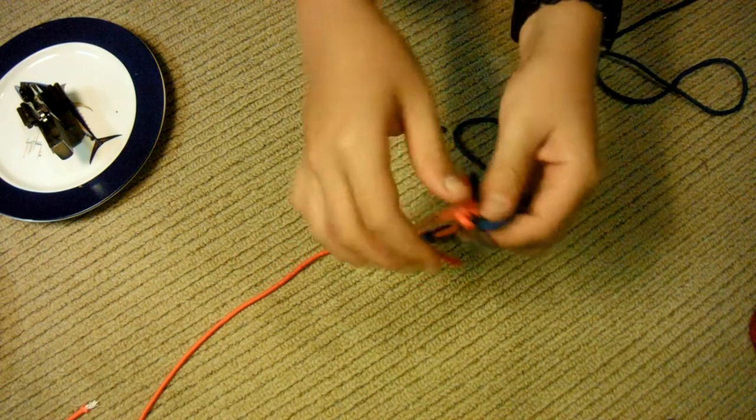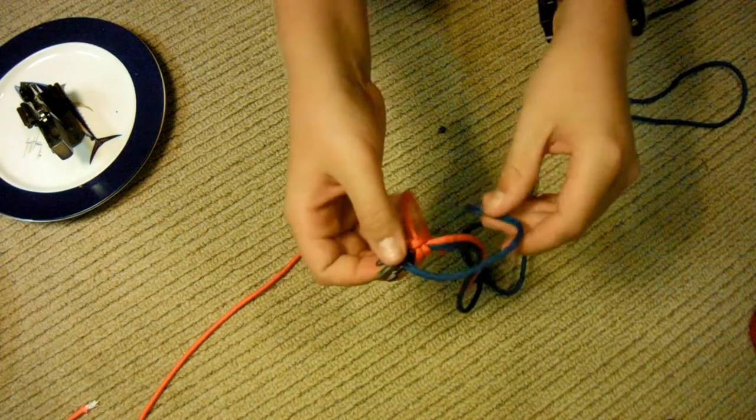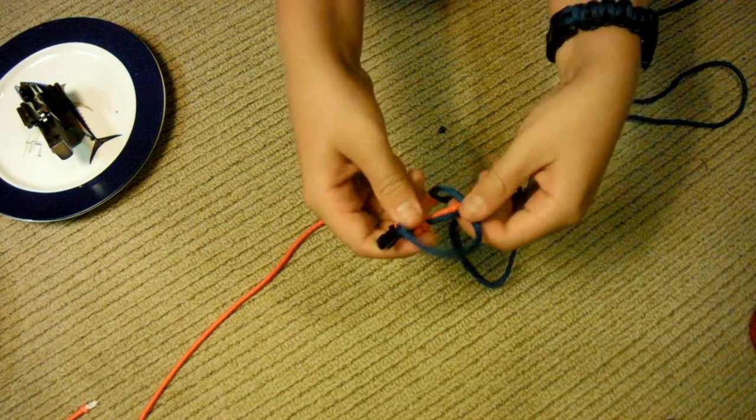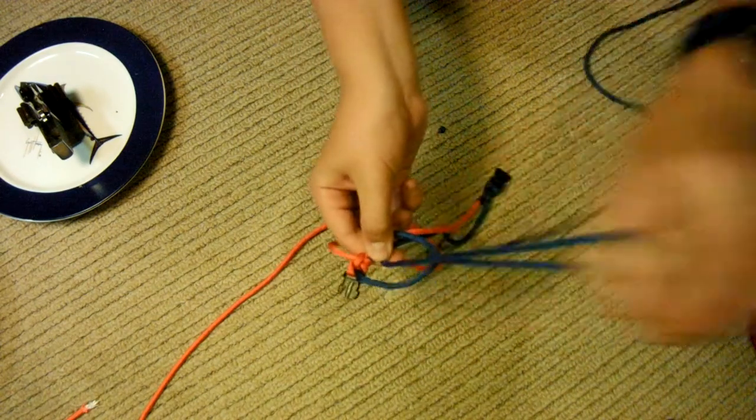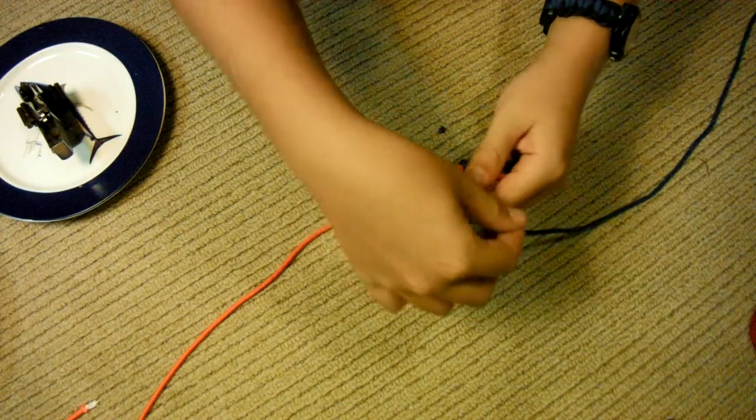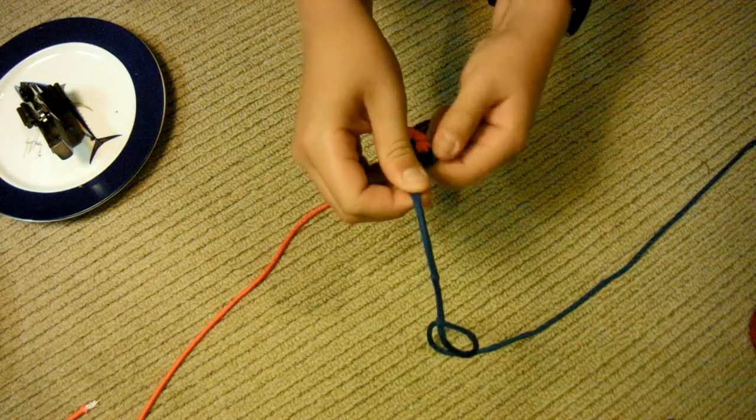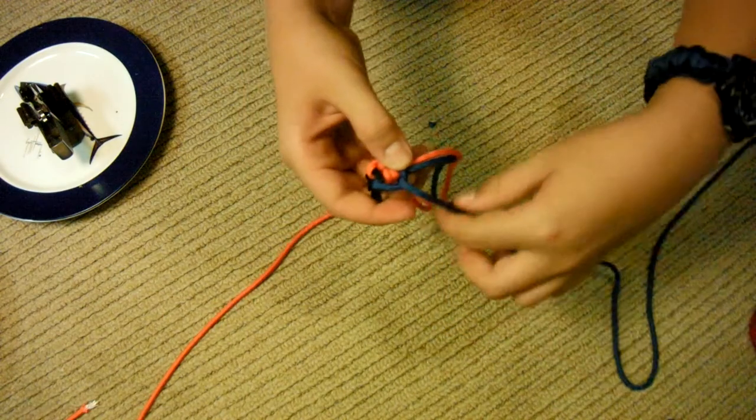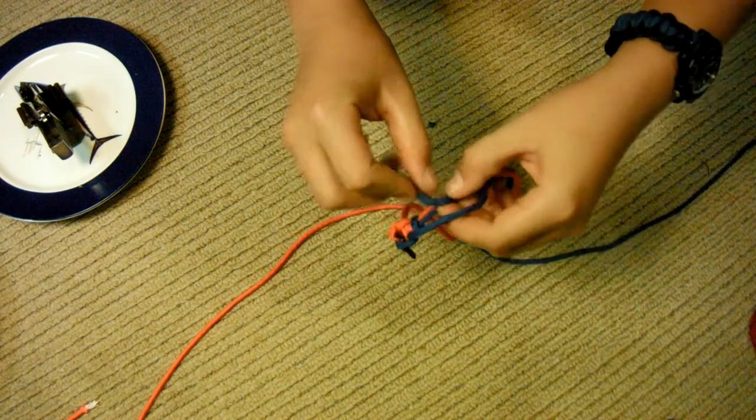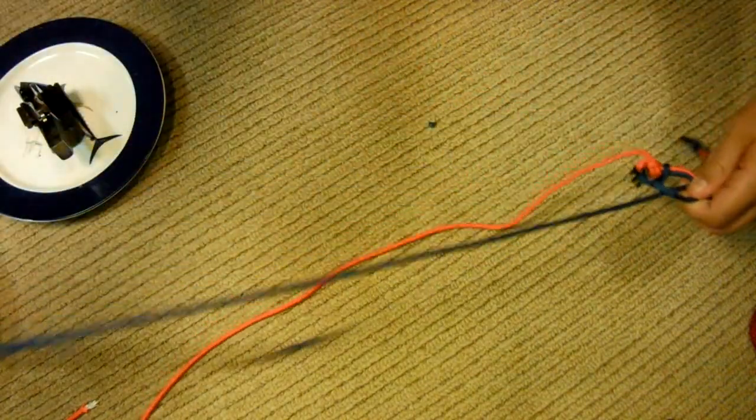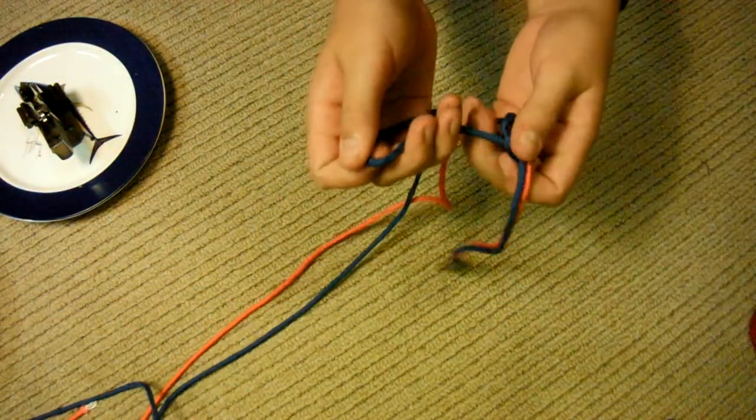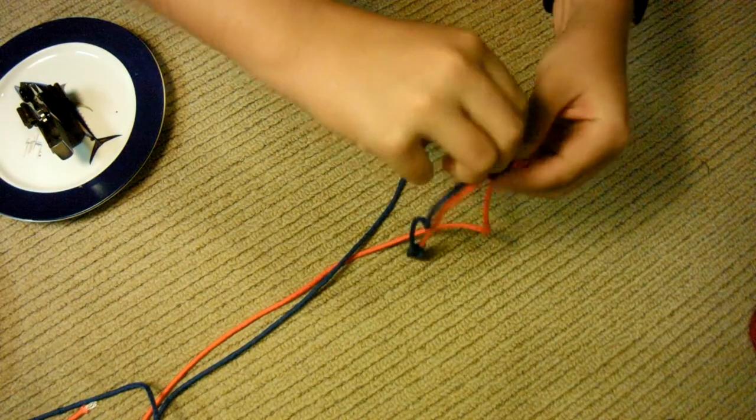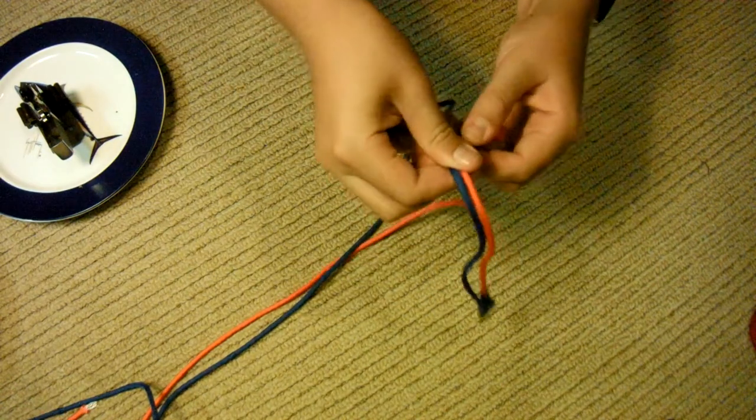And then once that is done, you're going to flip it over. And then you're going to do the same thing with the other one. Except on this side. So, I'll show that to you again. On top. Underneath. Up through that little hole there. And pull that tight. Like that. And then underneath. Around. And pull through. And pull that tight. And then just, I like to pull that one tight there. It just makes it look better.